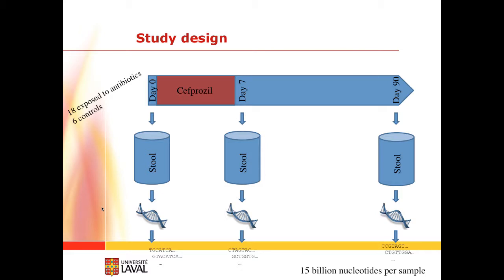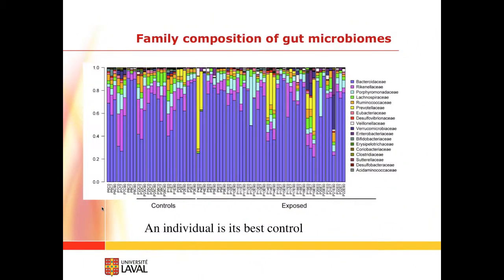We took six controls and 18 healthy people who actually took the antibiotics. We took a sample at day zero, a sample at day seven — day seven was chosen because that's supposed to be the peak of antibiotic activity in terms of suppression. The paradigm was that 90 days later you should be okay. We extracted DNA from the stool samples and sequenced pretty deep: 15 billion nucleotides per sample, just to get decent data.